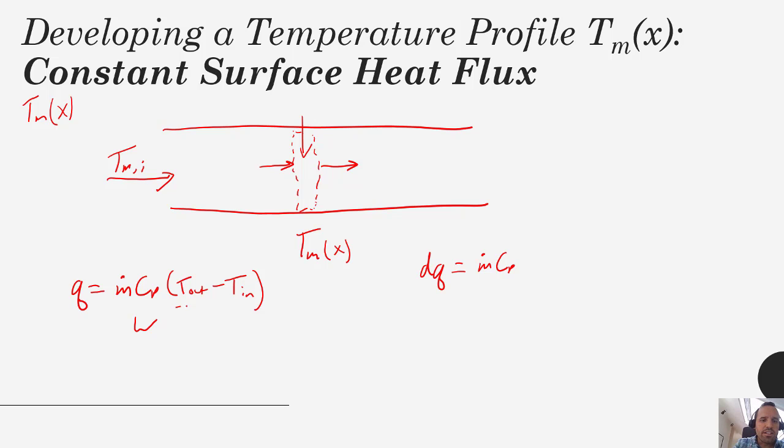Instead of this algebraic temperature difference, we're going to use this differential temperature difference, dt sub m. That's just to measure how much heat is being added to our little control volume.